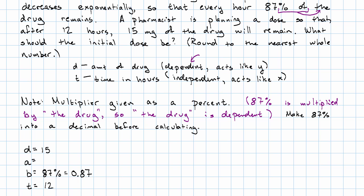This 15 is the value of D that goes with T equals 12. What we're being asked to find is the starting amount.